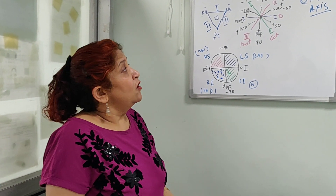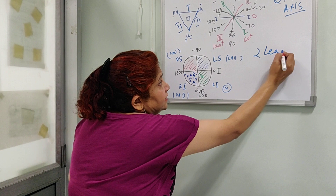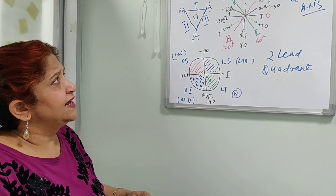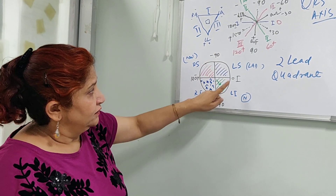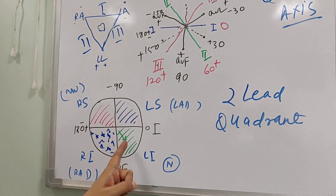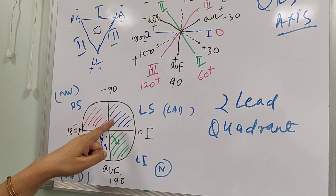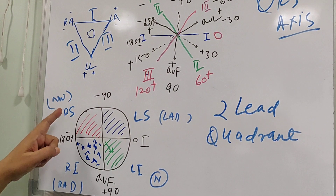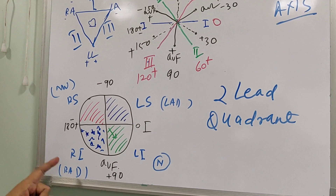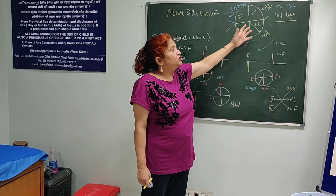Now we come to the first method of QRS axis determination — the two-lead method, also called the quadrant method. The entire hexaxial system is divided into four quadrants. The left and inferior quadrant represents normal axis. The left and superior quadrant is left axis deviation. The right and superior quadrant is extreme or northwest axis. The right and inferior quadrant represents right axis deviation.